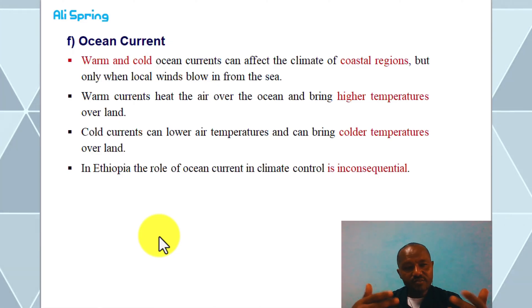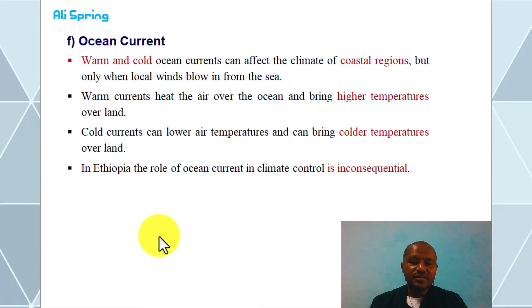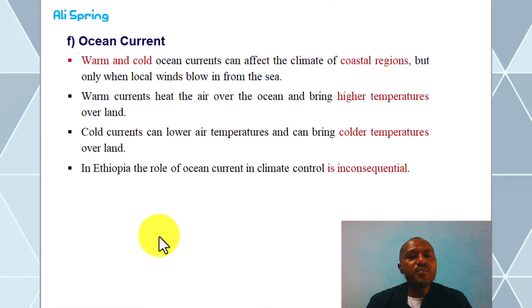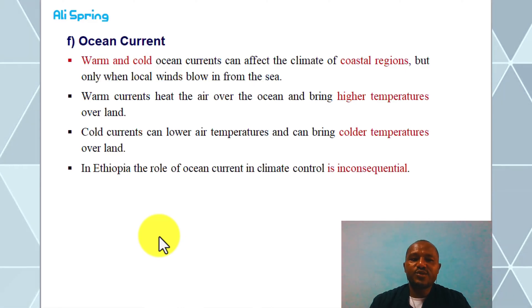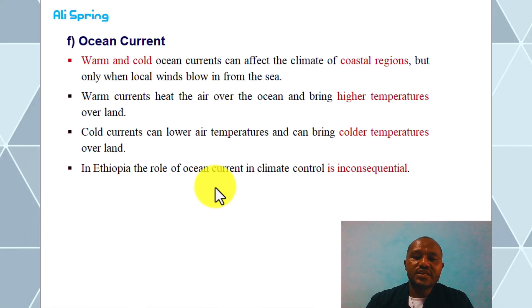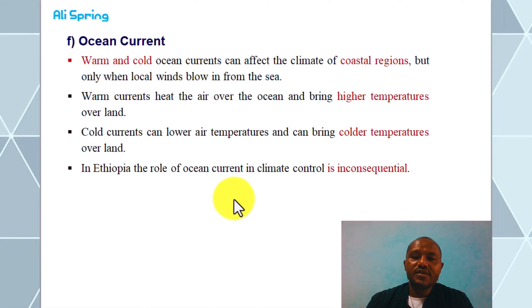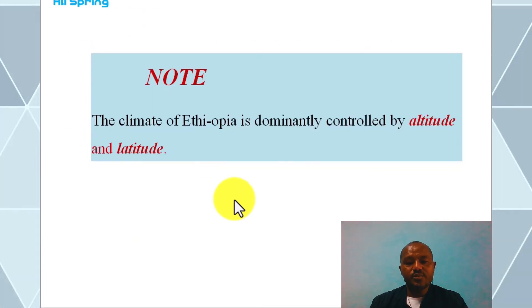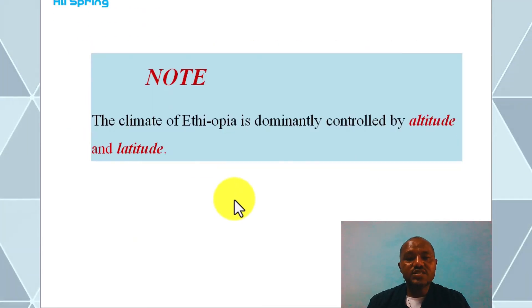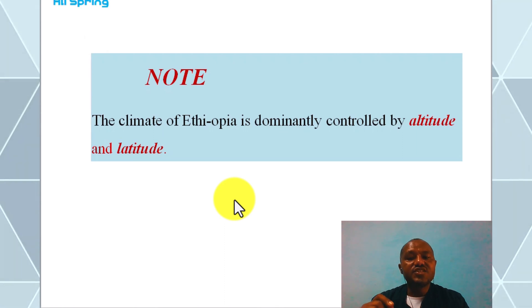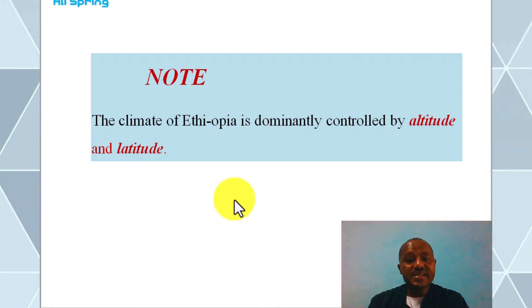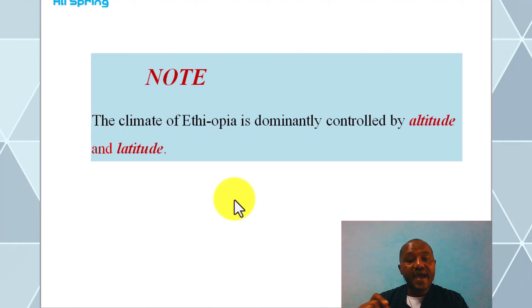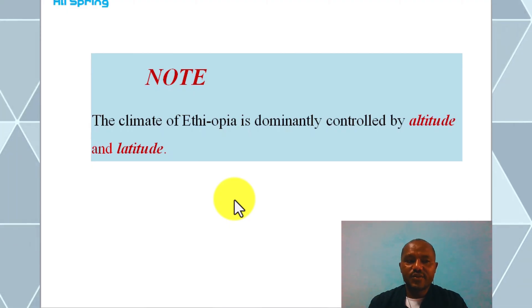The climate of Ethiopia is dominantly controlled by altitude and latitude.